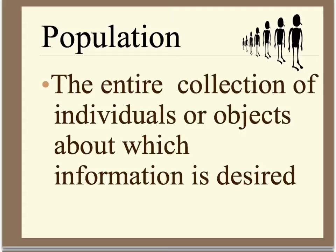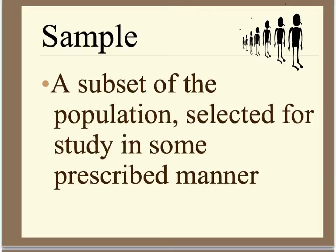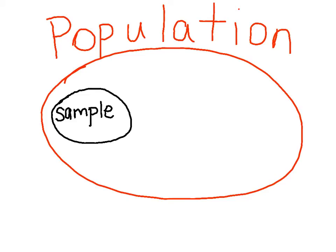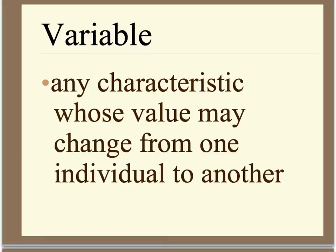A population is the whole group. In our example, the population would be all of the students at CCHS. In contrast, a sample is a part of that whole group — a part of the population. In our example, the sample was the 100 students that were selected randomly for that experiment, and the entire population would be the entire school. The key thing to remember is that samples always fit within the entire population. Those 100 students surveyed for their income fit within the entire population of CCHS.